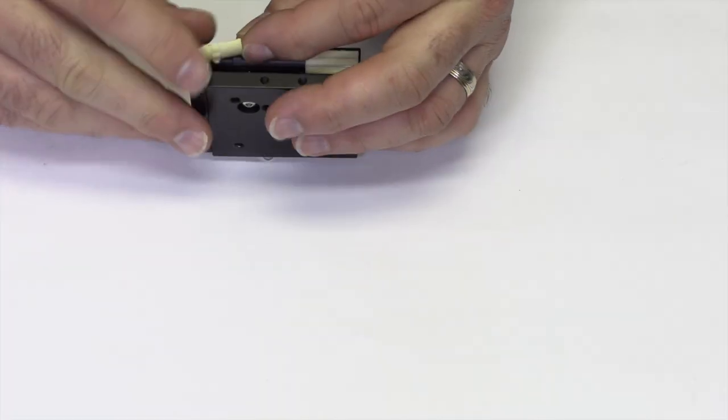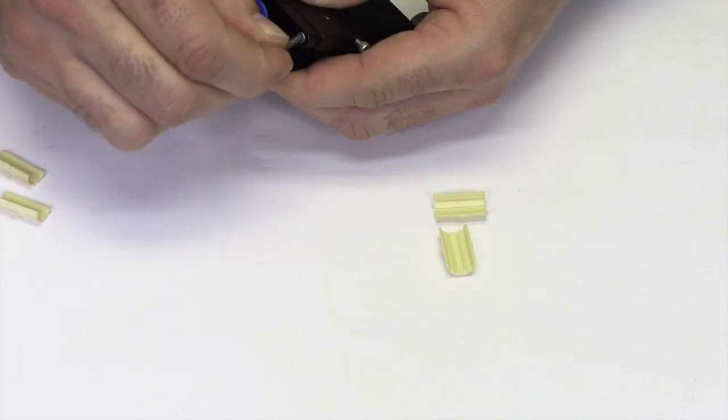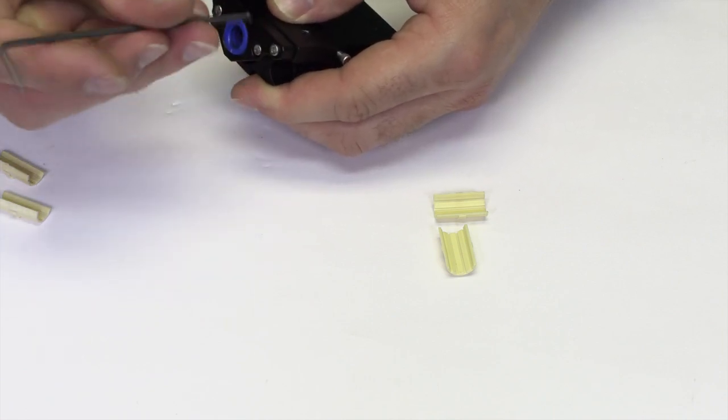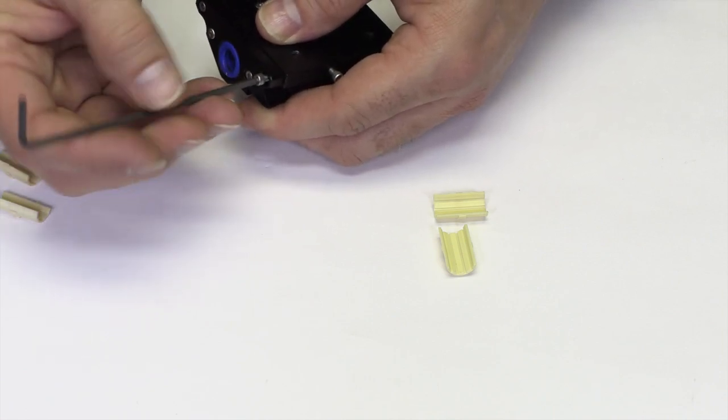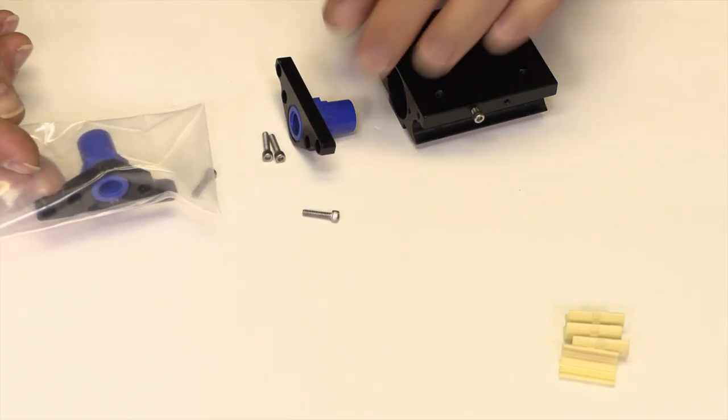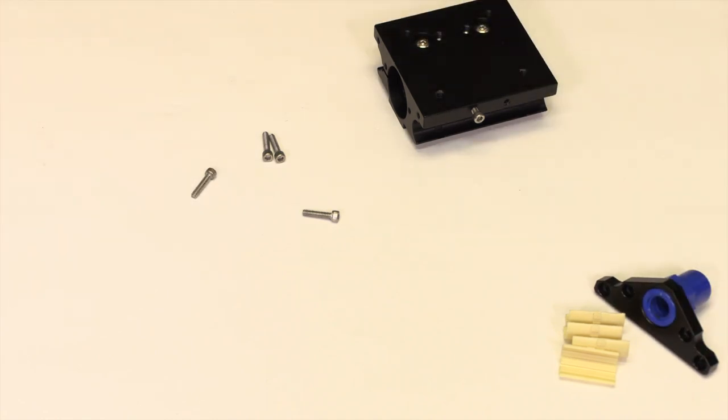Remove the four slide liners from the carriage. These will be replaced with new liners from the kit. Using a 3/32 inch Allen wrench, remove the four screws holding the lead screw nut and assembly to the carriage. The lead screw nut assembly will be replaced with a new one from the kit. We will need to reuse the four screws.